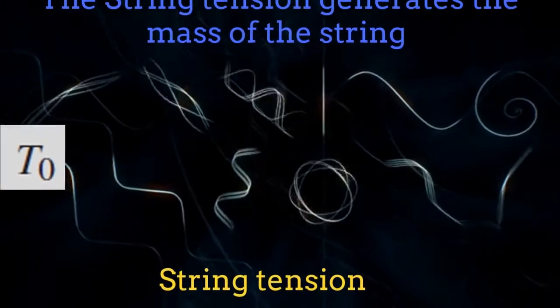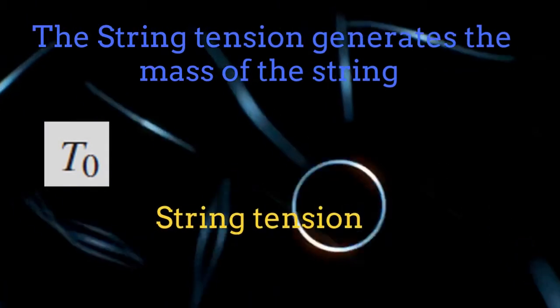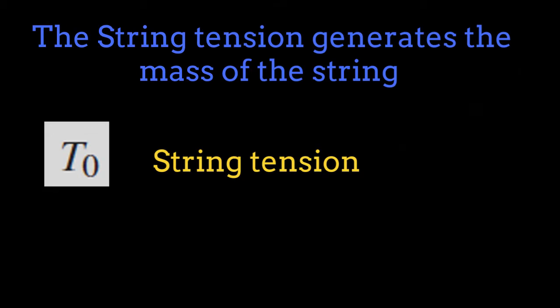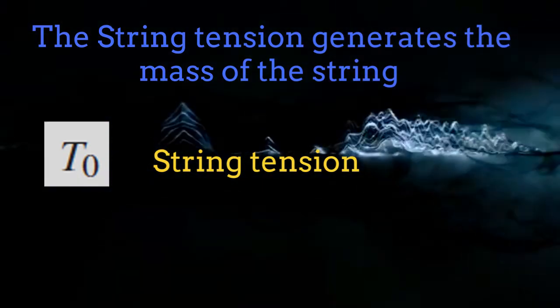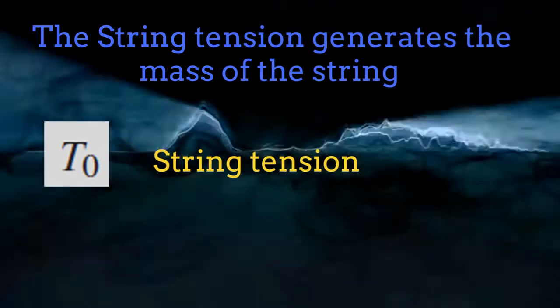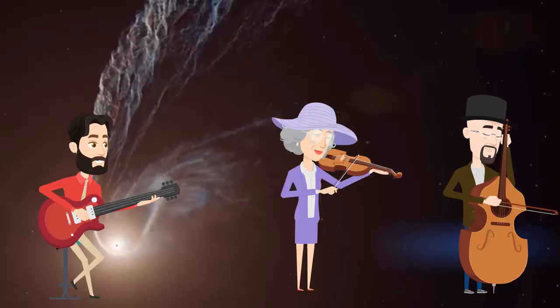The string tension, as its name suggests, is related to the tension accumulated by the string. All the mass of the string is obtained through its tension. In other words, the strings are naturally massless and the tension generates their effective mass.